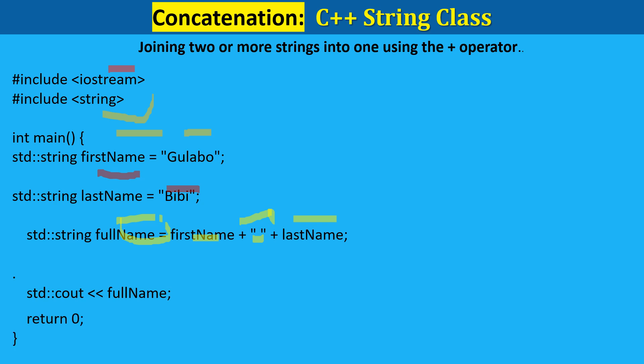Step 4 — output the concatenated full_name. We use cout to print the value of full_name to the console. The output will be "gulab bb". Return 0.